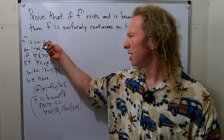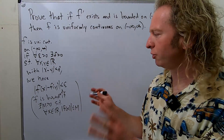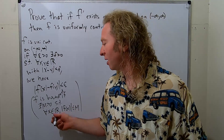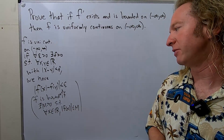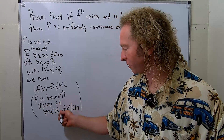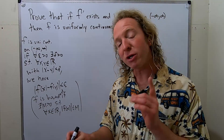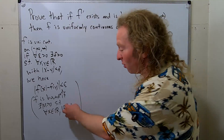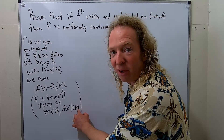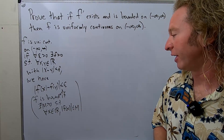A function is bounded if there is a number m such that for every x, whenever you take the absolute value of that function, it's less than or equal to m. You can assume m is positive because if m equals zero, you can just make it m plus one — and then life is good.